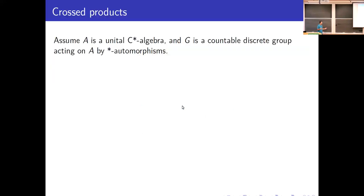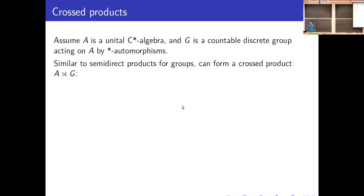Just to refresh our memories, even though most of you probably already know what a cross-product is: let's say I have a discrete group and a unital C*-algebra, just to keep our sanity, and I have G acting on it by star-automorphisms. From there I can form a larger C*-algebra, which is very similar to what the semi-direct product of two groups looks like.